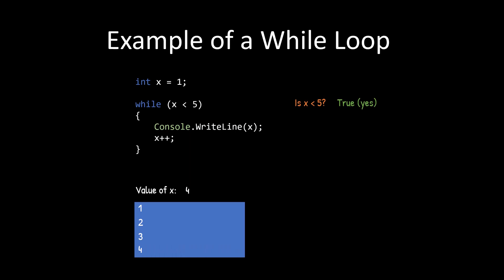And then eventually what's going to happen is it's going to hit five. Is five less than five? No, that is false. And then it's going to drop out of the loop. So five will not be printed. It's going to skip the code block and it's going to move on.